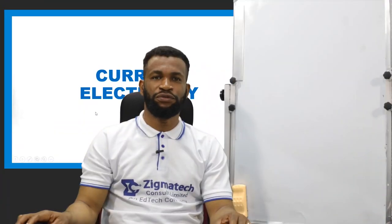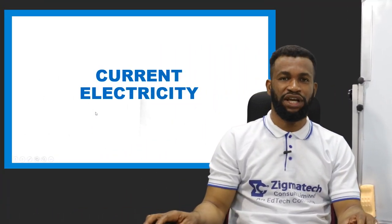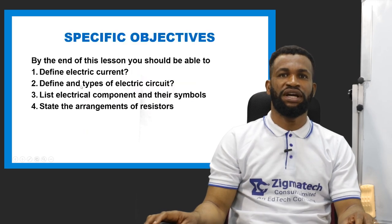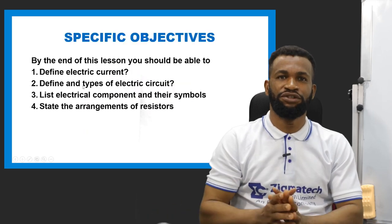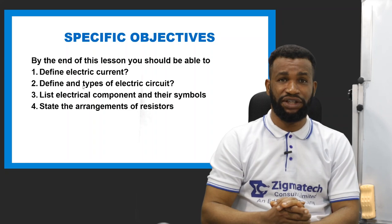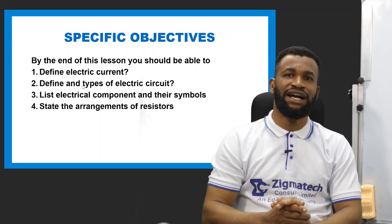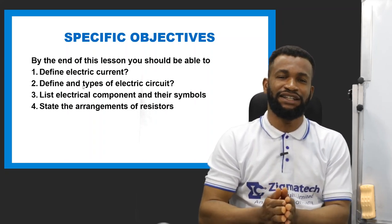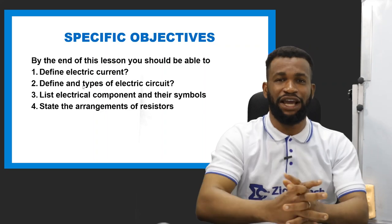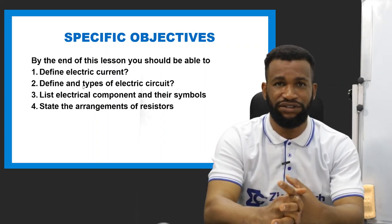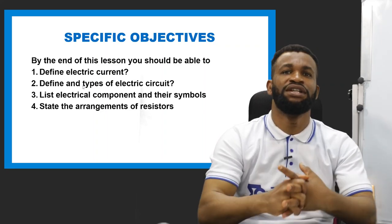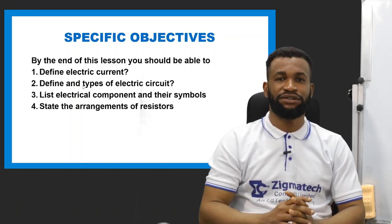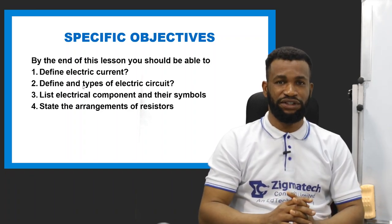Welcome to physics class on electricity. By the end of this lesson, you should be able to define electric current, define and state the types of electric circuits, list electrical components and their symbols, and state the arrangement of resistors.